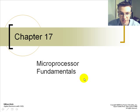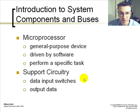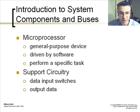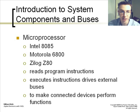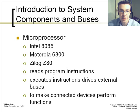Chapter 17, Microprocessor Fundamentals — an introduction to system components and buses. A microprocessor is a general-purpose device driven by software to perform a specific task. There is various support circuitry that goes along with a microprocessor, such as its data input switches and its output data. Examples of microprocessors are the Intel 8085, the Motorola 68000, which will be used in classrooms, and the Zilog Z80.